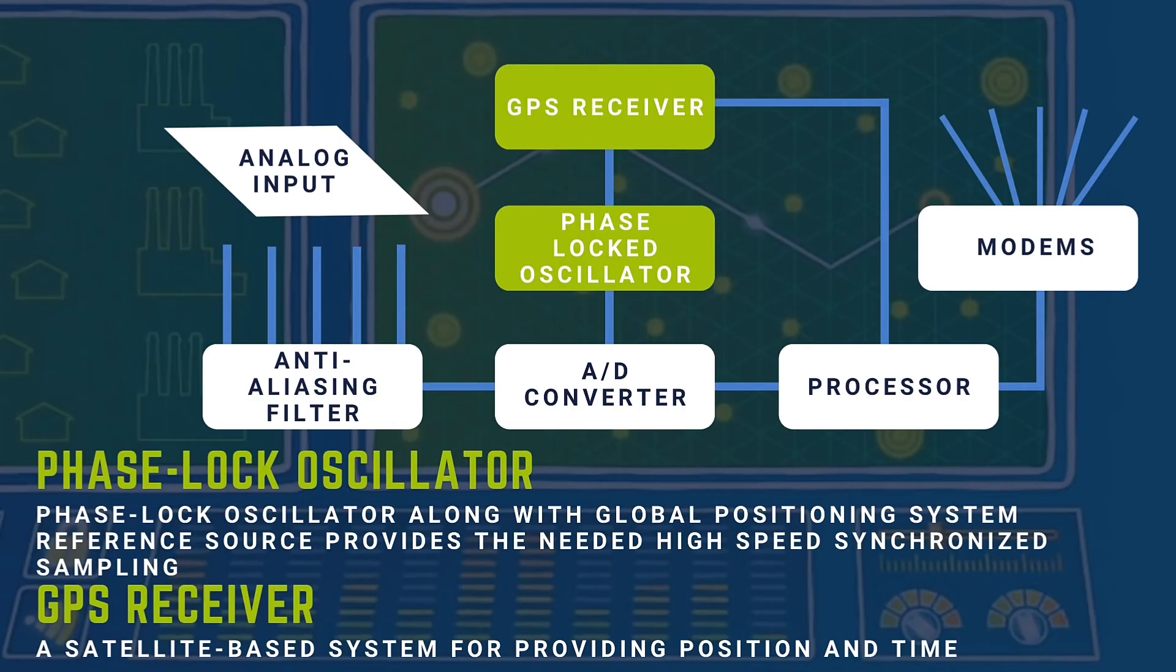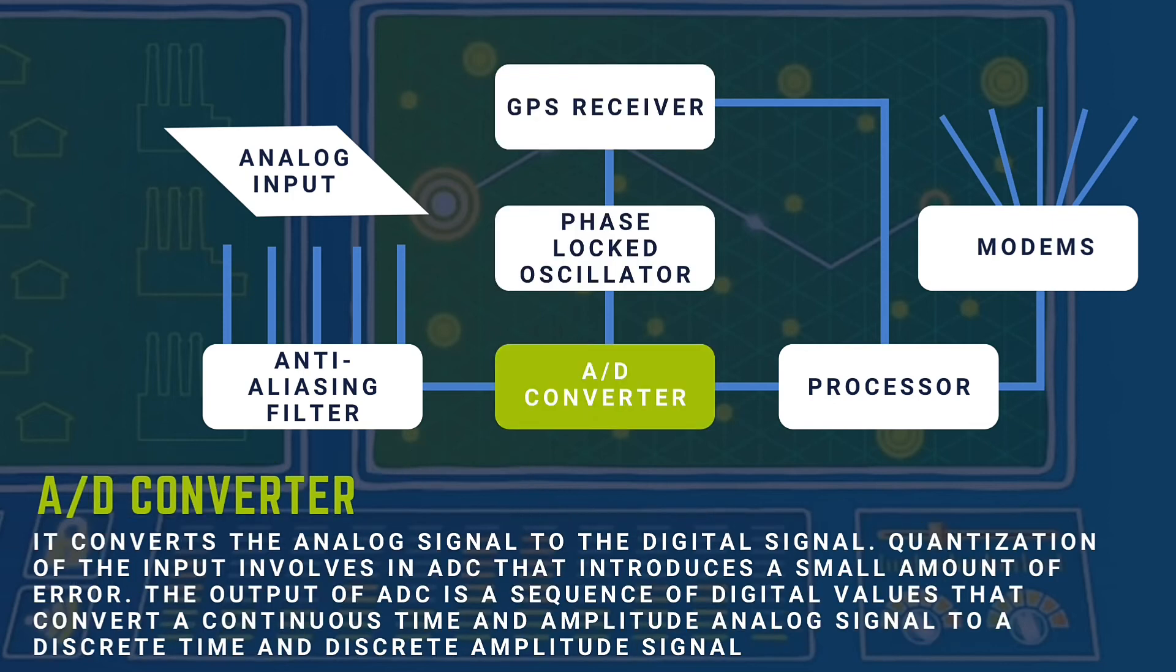A/D converter: It converts the analog signal to a digital signal. Quantization of the input involves an ADC that introduces a small amount of error. The output of the ADC is a sequence of digital values that convert a continuous time and amplitude analog signal to a discrete time and discrete amplitude signal.